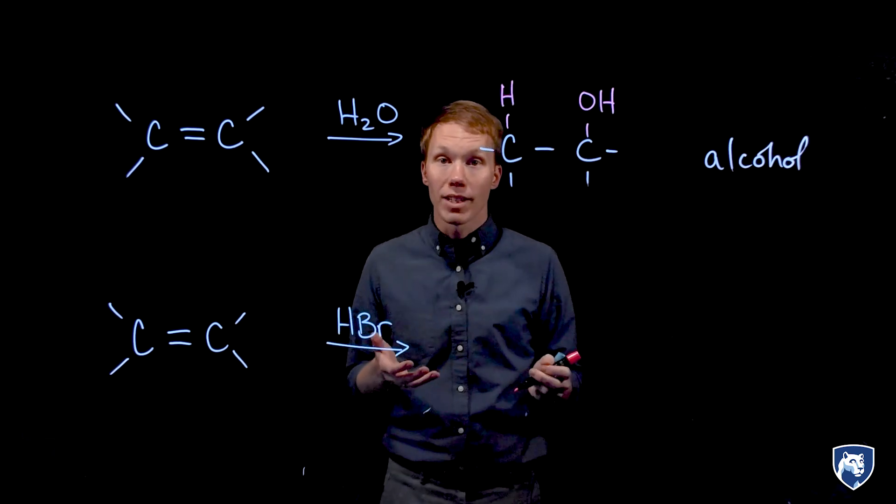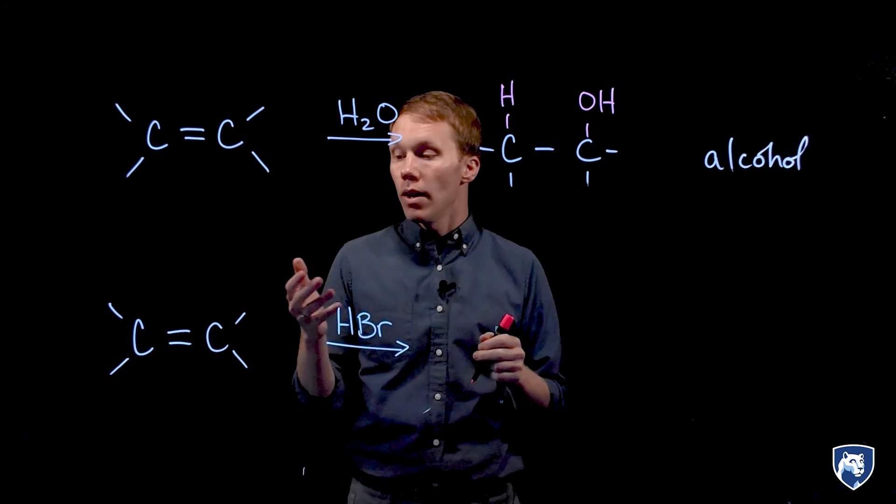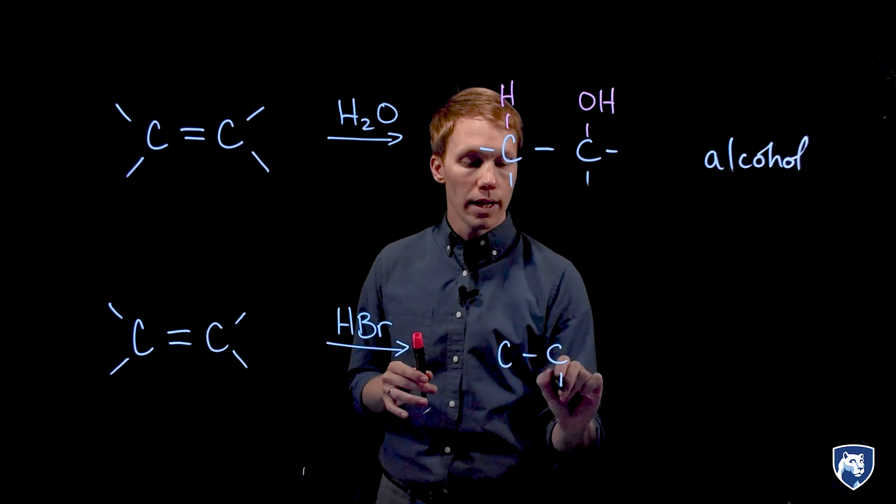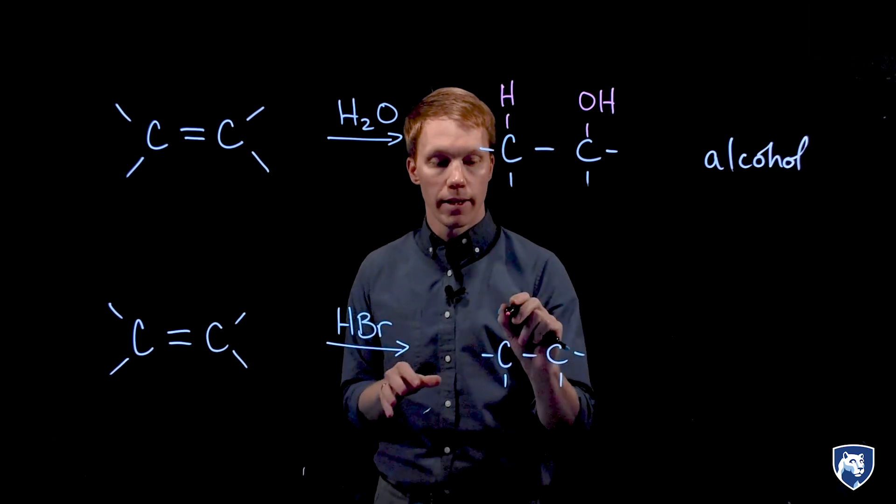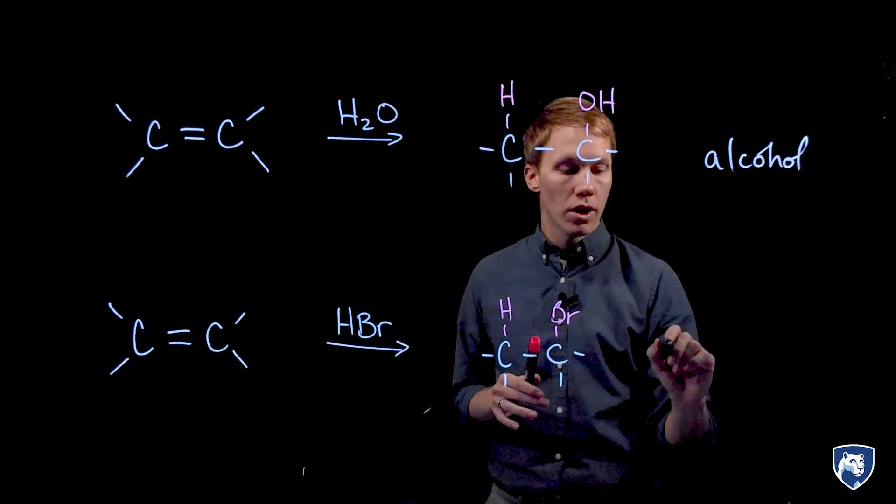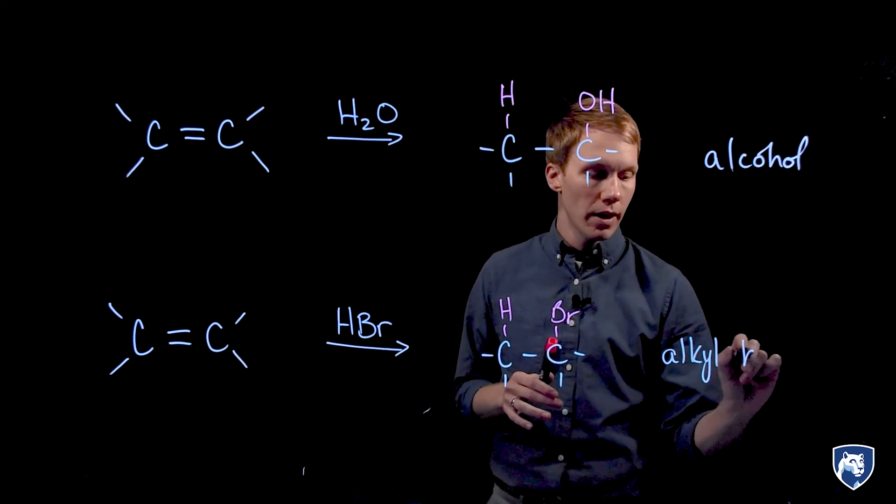I want to compare this reaction to the addition of HX to an alkene. Here we add H and Br to each carbon of the double bond in a very similar manner that H and OH was added above, and this generates an alkyl halide.